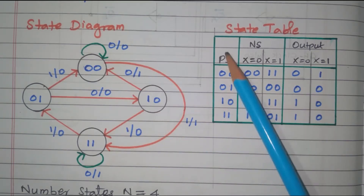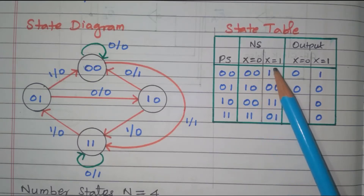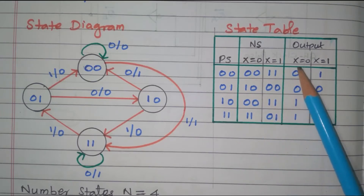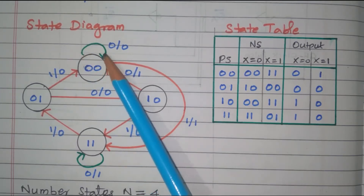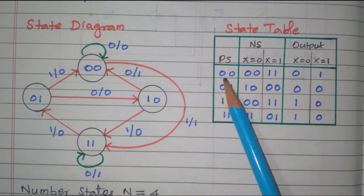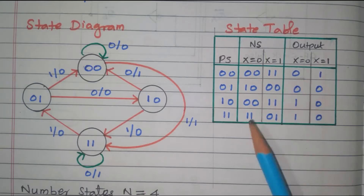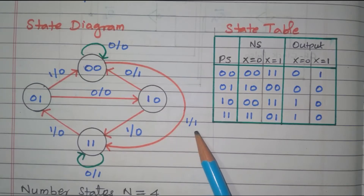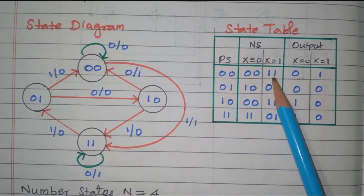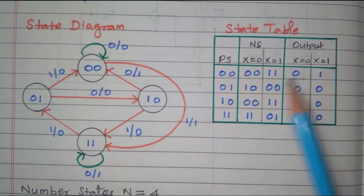Now we will develop the state table. This is the present state; these two columns are next state for x=0 and x=1, and this is the output for x=0 and x=1. First we take state 00: it goes to 00 itself with input=0, output=0. Then 00 goes to 11 with input=1, output=1.